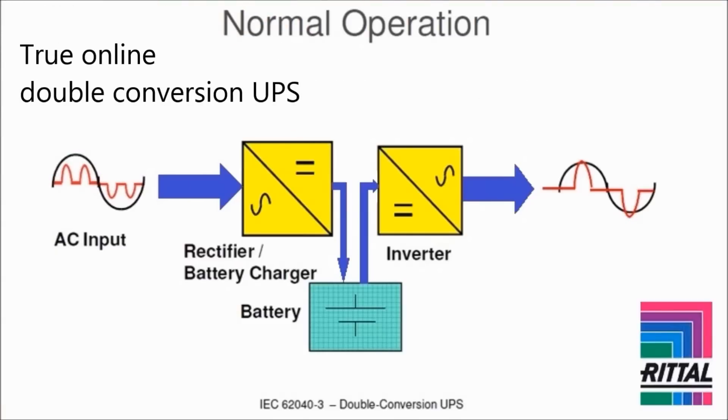The best solution for a data center is a UPS featuring true online double conversion technology. The PMC-12 falls into this category. The double conversion refers to the way the UPS functions during normal operation. Unlike the two previous types, a UPS featuring true online double conversion technology does not simply pass the AC input through a bypass switch to the output.